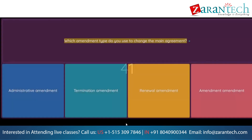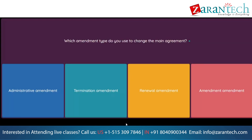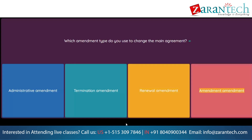Question: Which amendment type do you use to change the main agreement? Option 1: Administrative amendment. Option 2: Termination amendment. Option 3: Renewal amendment. Option 4: Amendment amendment.